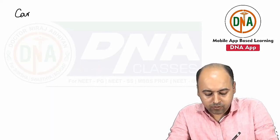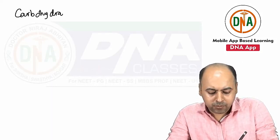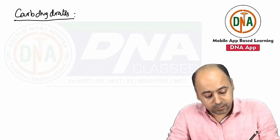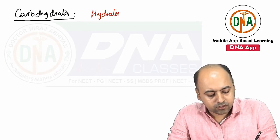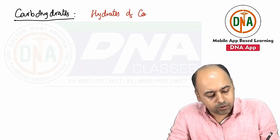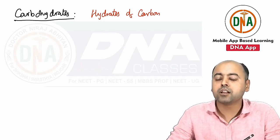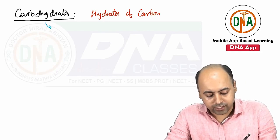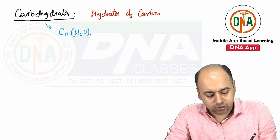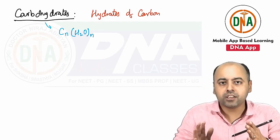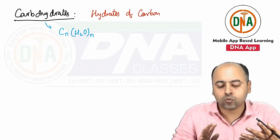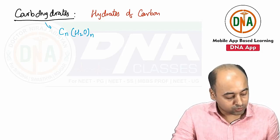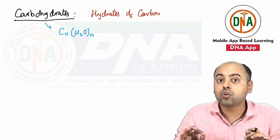First, what do we mean by carbohydrates? As the name tells us, it means hydrates of carbon. When you look at the formula of carbohydrates, it can be described as CₙH₂ₙOₙ, meaning for every carbon we have a corresponding water molecule. Therefore, the molecule is known as the hydrate of carbon, or carbohydrate.